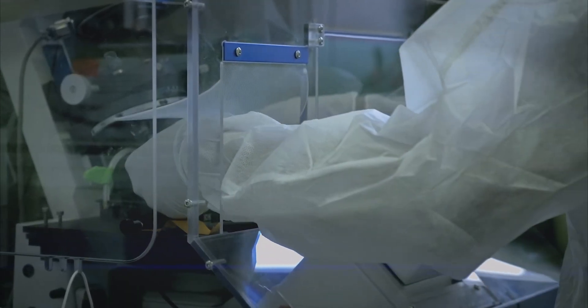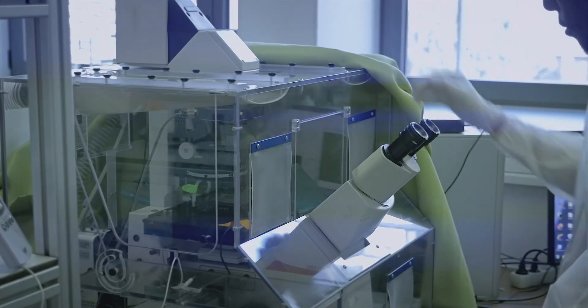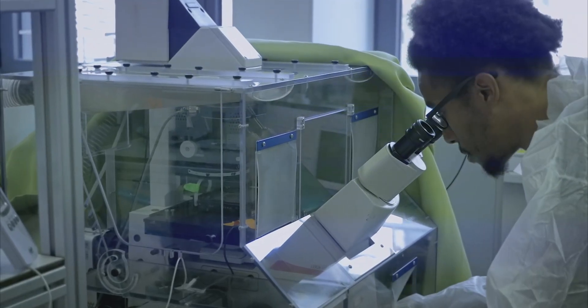But how does Brillouin microscopy differ from conventional light microscopy? What are the mechanical properties of cells and why are they important to measure?